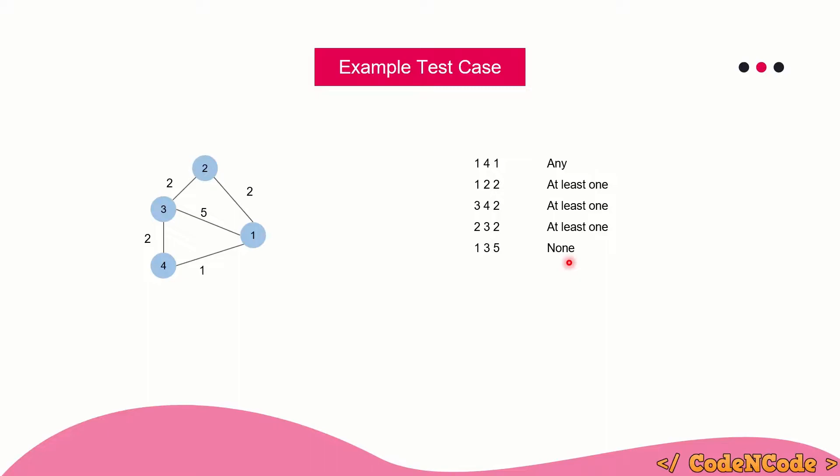Now let's see how we will solve this problem. An important thing: this problem requires a lot of prerequisites. You should have knowledge of MST and how to calculate it, Disjoint Set Union because we're going to use Kruskal's algorithm, and also bridges — how to find bridges. If you are missing knowledge of any one of these concepts, I would highly advise you to complete that first before watching this editorial.